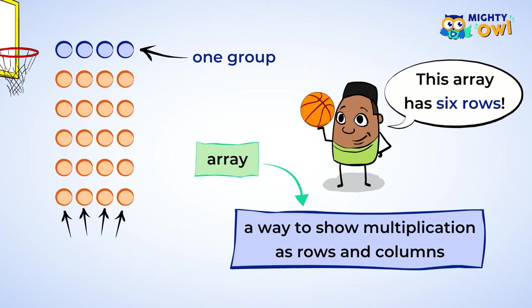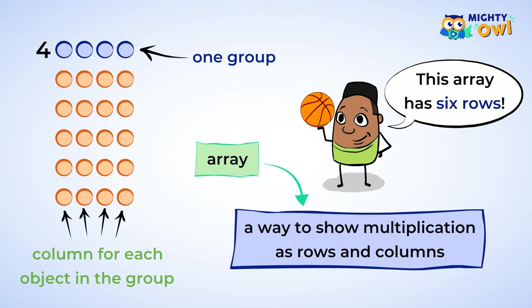The row has four columns. There's a column for each object in the group. Your class has four students in each group, so there are four columns.